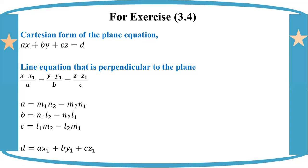The derived values: a equals m1n2 minus m2n1, b equals n1l2 minus n2l1, c equals l1m2 minus l2m1. The Cartesian form of the plane equation is ax1 plus by1 plus cz1 equals d.